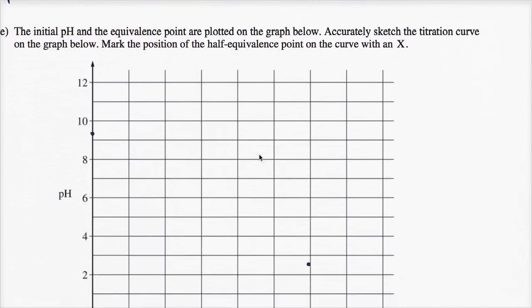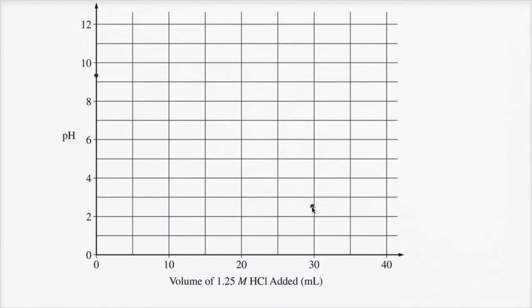That's why this is at 2.54 when we've added close to 30 milliliters of that 1.25 molar hydrochloric acid solution. That is when we hit our equivalence point, and we see the pH right over there.